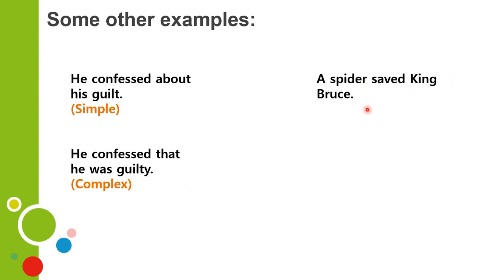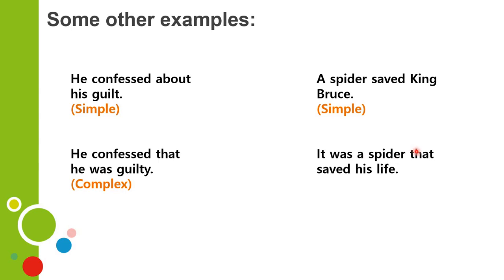More examples: 'He confessed about his guilt' — simple. Complex: 'He confessed that he was guilty.' Compound: 'He was guilty and he confessed it.' Another: 'A spider saved King Bruce' — simple. Complex: 'It was a spider that saved King Bruce' — relative pronoun, adjective clause. Compound: 'King Bruce's life was saved and it was a spider who did that.' Now this completes the transformation of simple to compound to complex. You know the nine rules — keep them in mind and revise them, make your own sentences based on them.